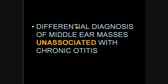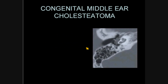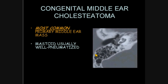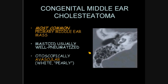We're going to talk briefly about a few cases — differential diagnosis of middle ear masses which are unassociated with chronic otitis. First is the congenital middle ear cholesteatoma, which we have an example of here. This is the most common primary middle ear mass. The mastoid is typically well pneumatized because these patients do not ordinarily have a history of chronic otitis, and they're otoscopically avascular, usually described as white or pearly.